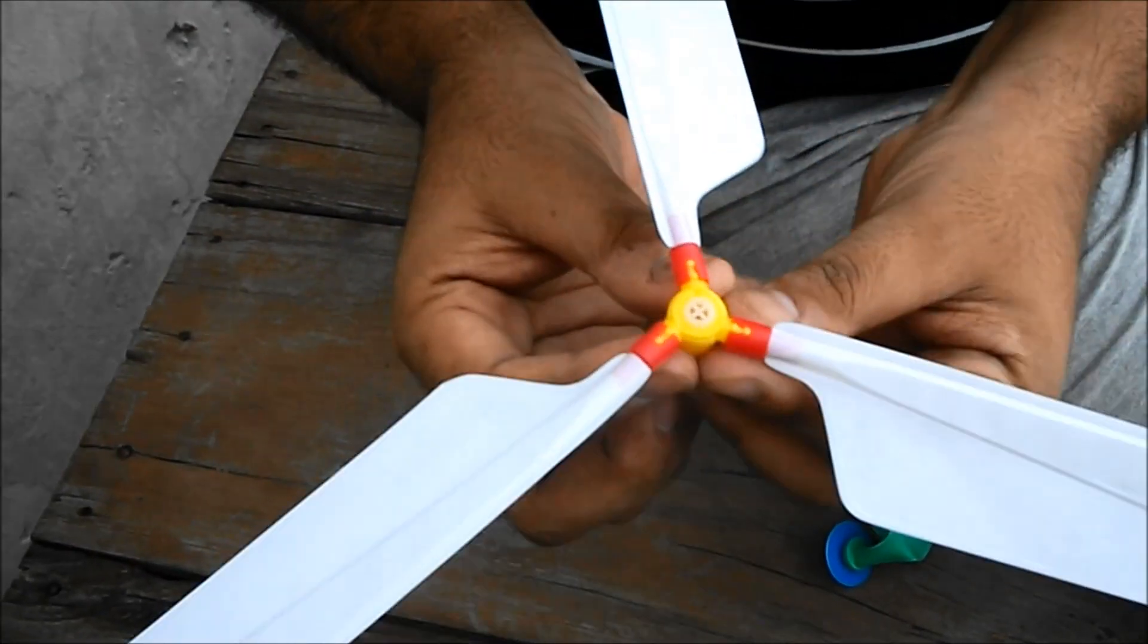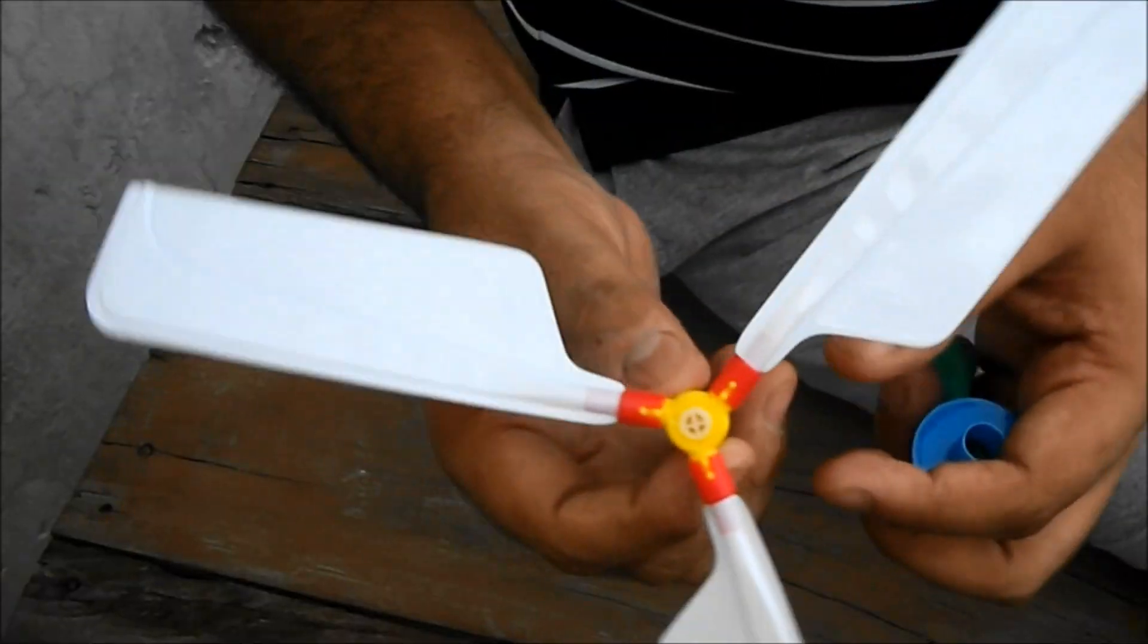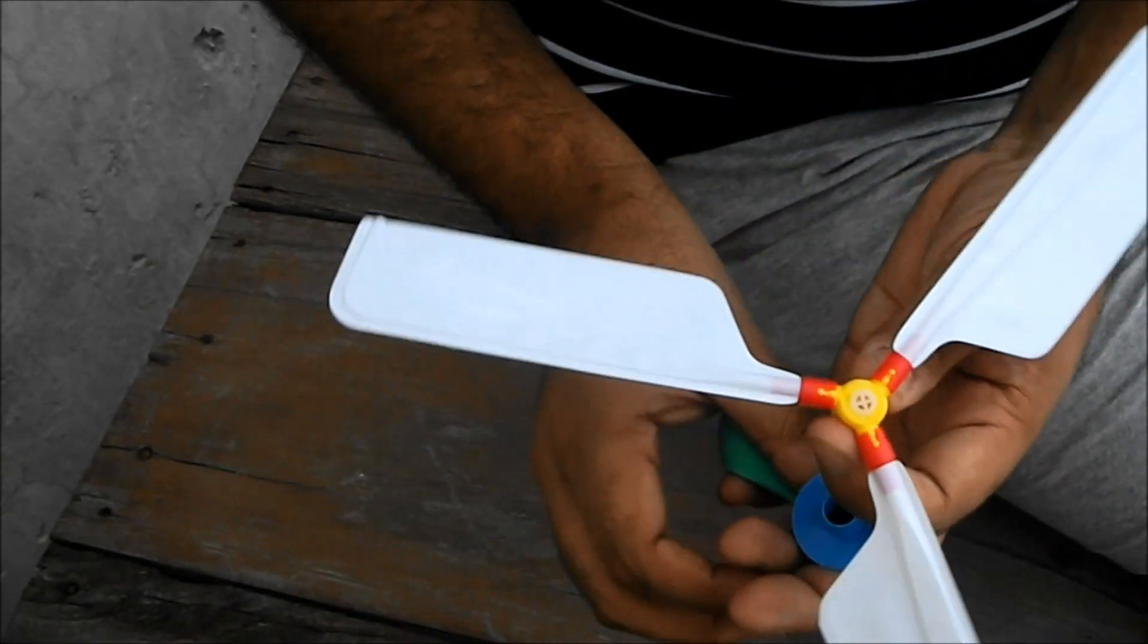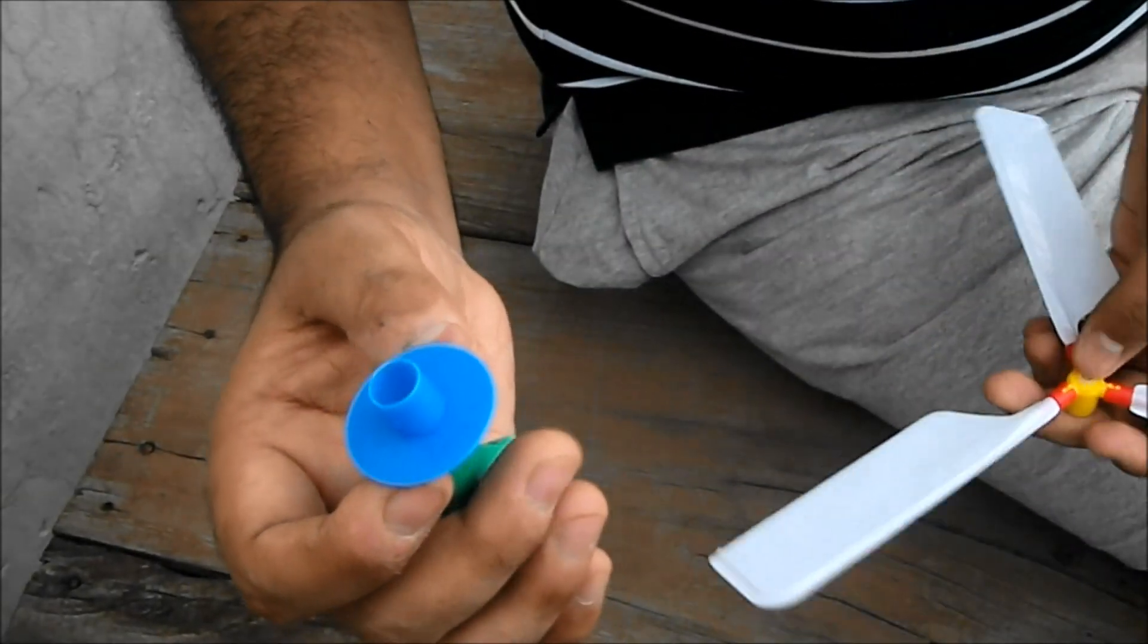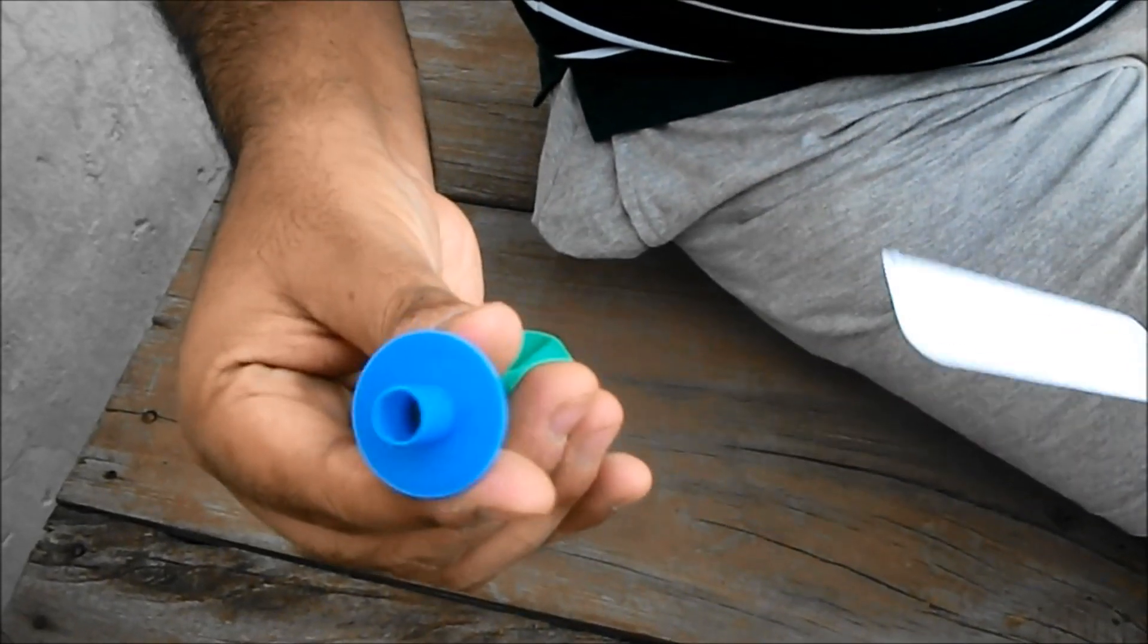You see what the rotors look like. Now what we have to do is keep this attachment separate, fill in air here, then attach the two and just let it go. I'll show you how.